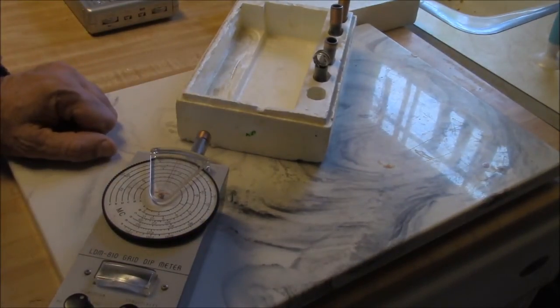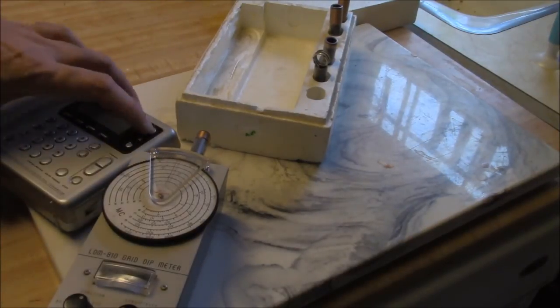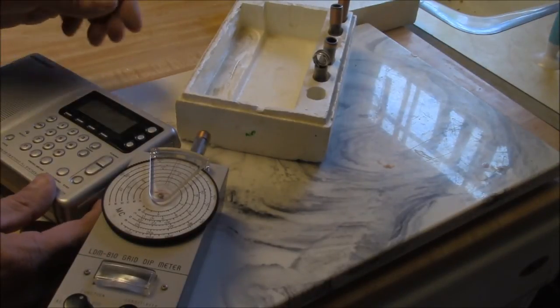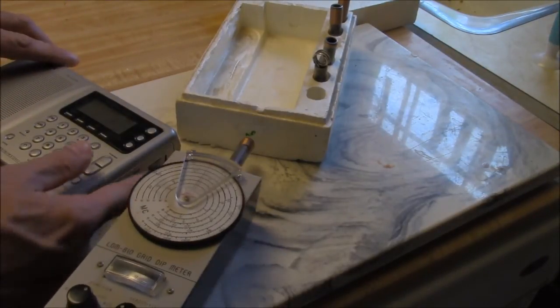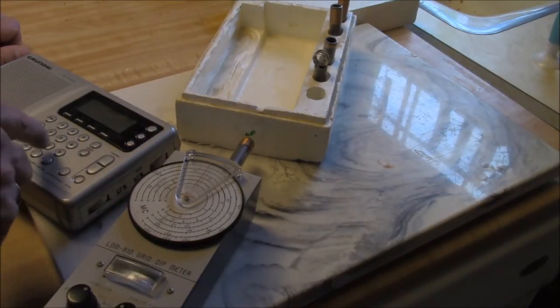The grid dip meter has some other cool purposes too. You can use it as a little oscillator, just as a test oscillator. Let's get out the trusty yacht boy here, this is probably a fake Grundig, and I don't know, we'll tune it to 12 megahertz.